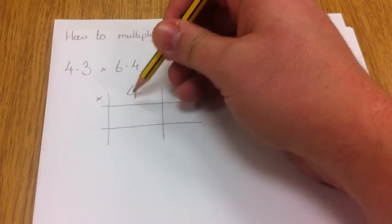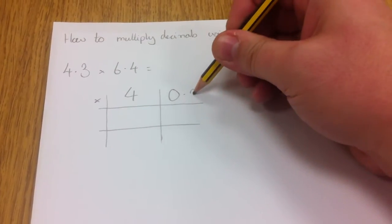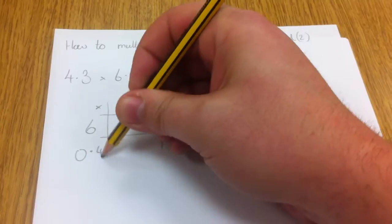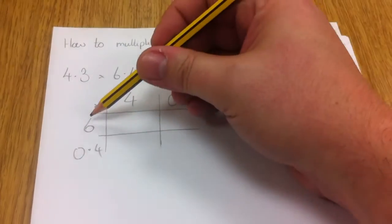So just as I did before, I'm going to partition them. So it's 4, 0.3, and 6, and 0.4. I'm going to start here.